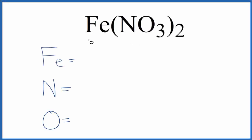Let's find the number of atoms for Fe(NO3)2. This is iron 2 nitrate.